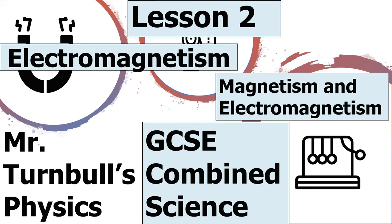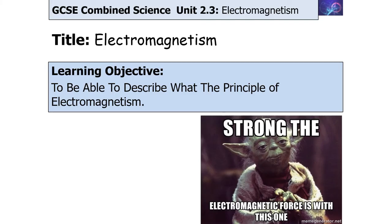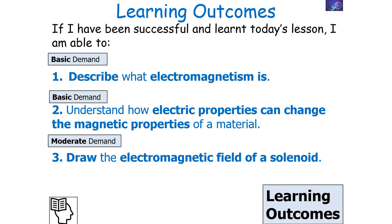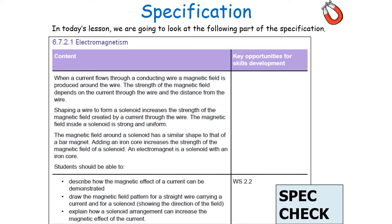Hello and welcome to today's lesson on electromagnetism, which is part of the magnetism and electromagnetism topic in GCSE Combined Science Physics. In today's lesson we're going to describe what the principle of electromagnetism is. Our learning objectives are: describe what electromagnetism is, understand how electric properties can change the magnetic properties of a material, and understand how to draw the electromagnetic field of a solenoid. This links to GCSE Combined Science Specification 6.7.2.1 Electromagnetism.